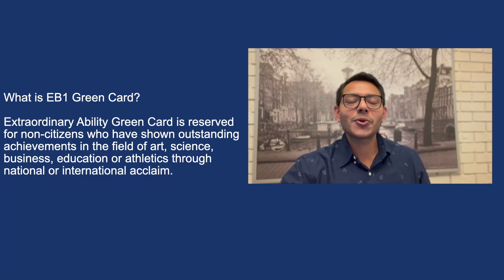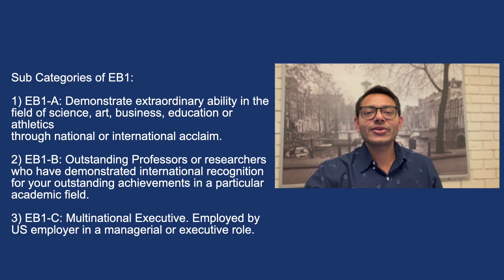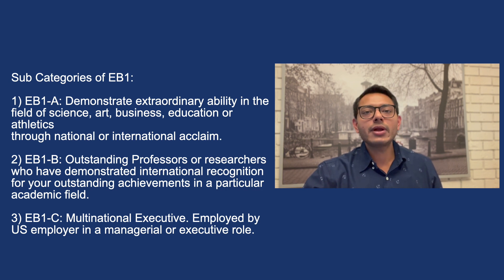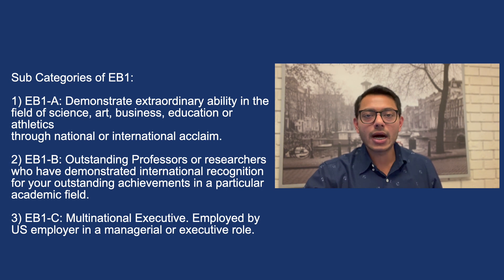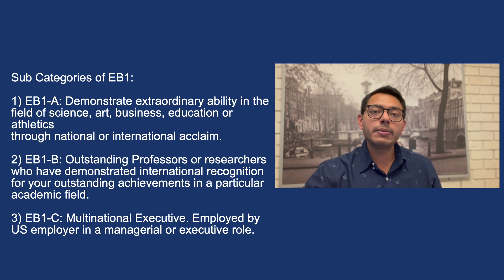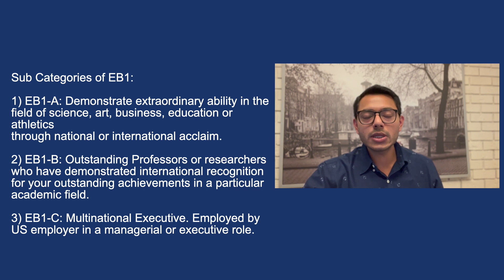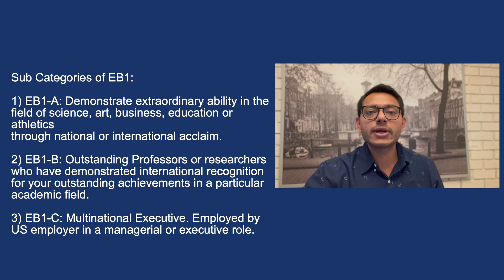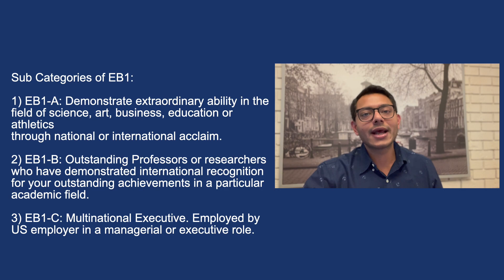EB1 green card is also known as the extraordinary ability or first preference green card category. There are three subcategories: EB1A, EB1B, and EB1C. EB1A is reserved for individuals who demonstrate extraordinary ability in the field of art, science, education, business, or athletics. EB1B stands for outstanding professors or researchers and is reserved for individuals who have shown international recognition for their outstanding achievements in a particular academic field. EB1C is reserved for multinational executives.